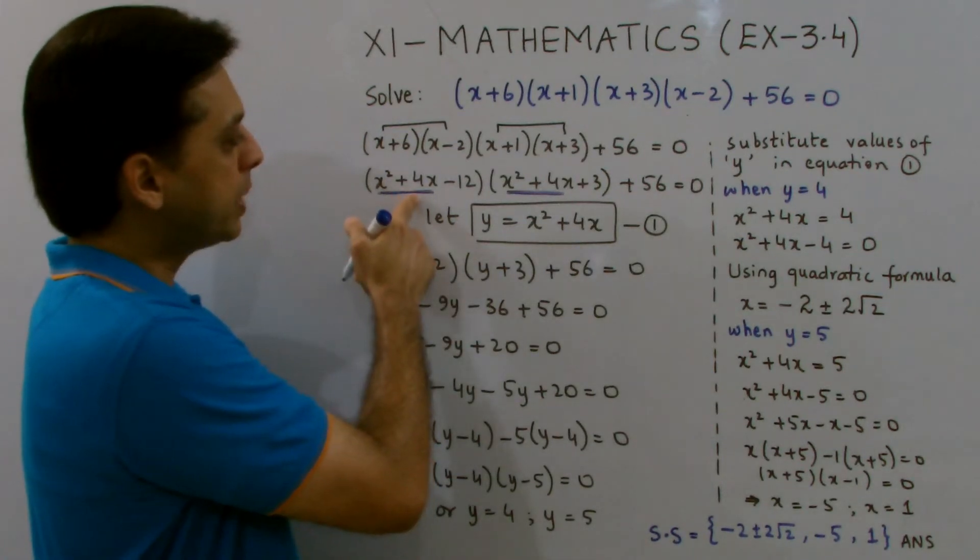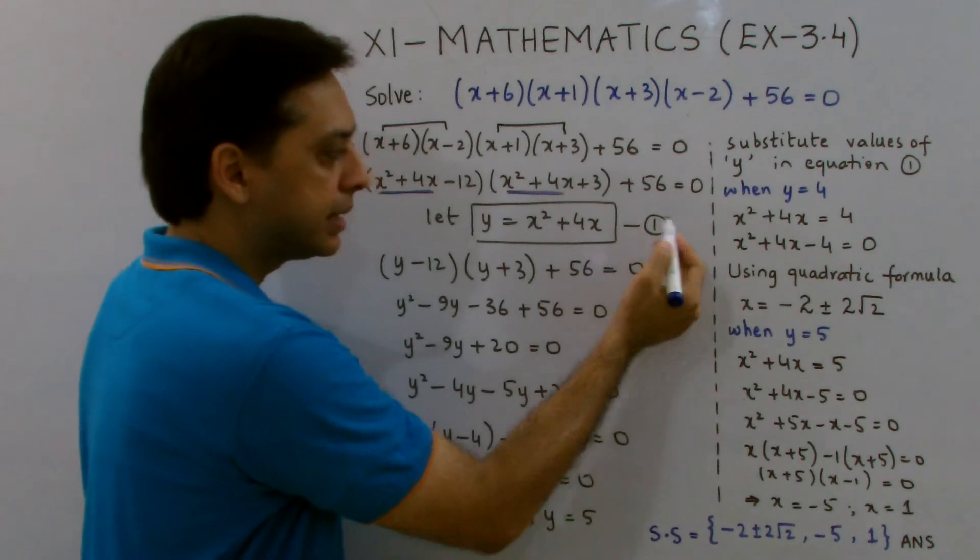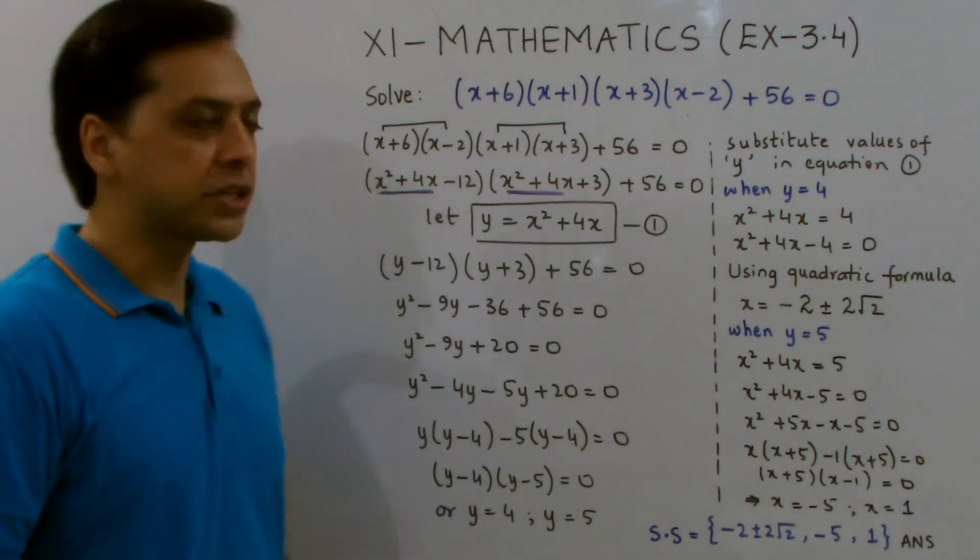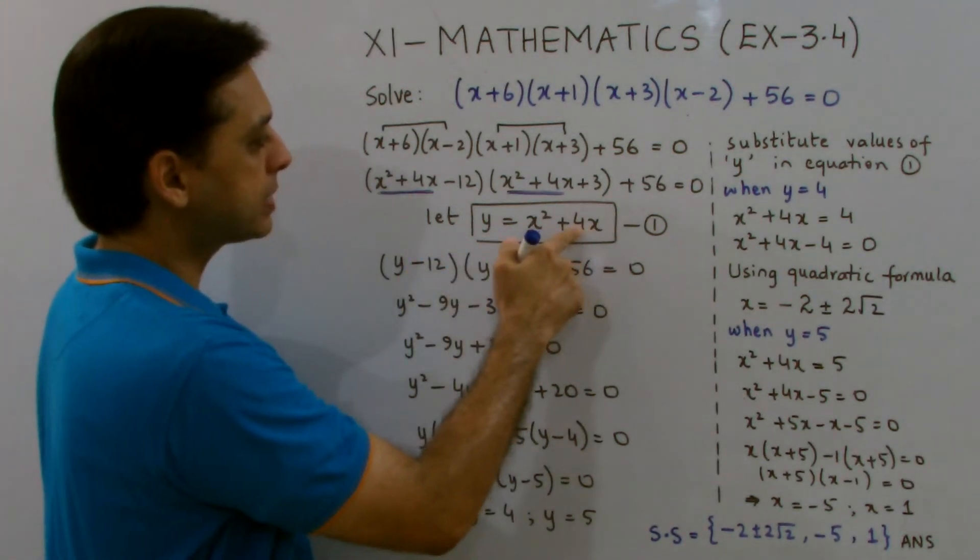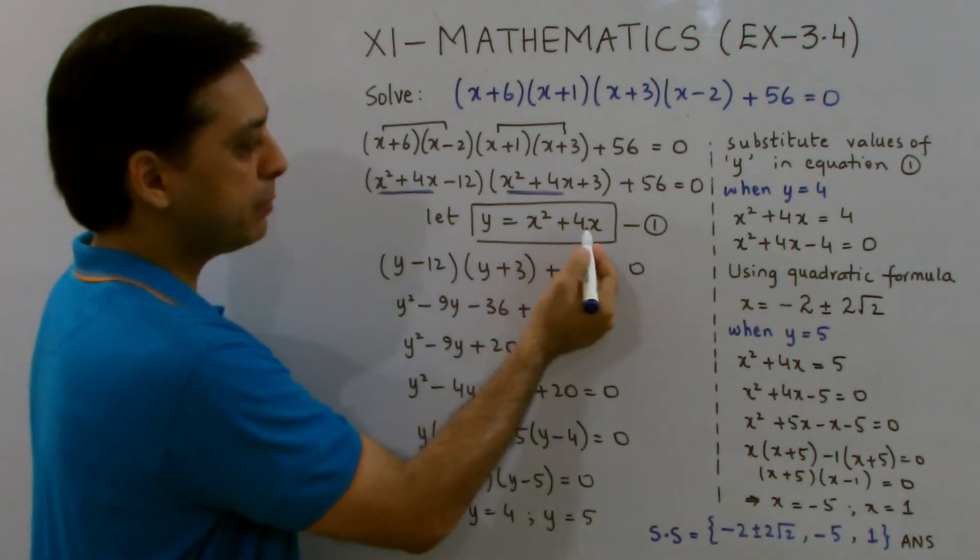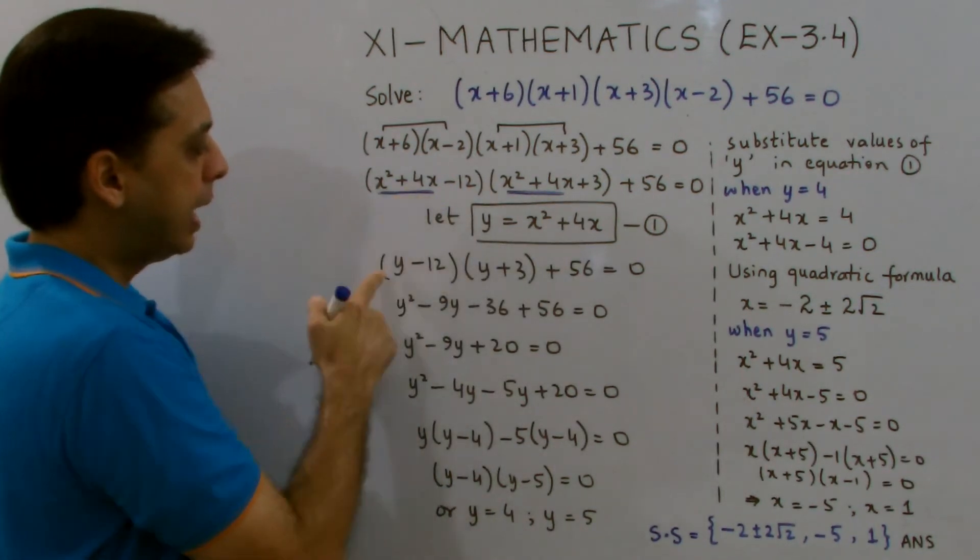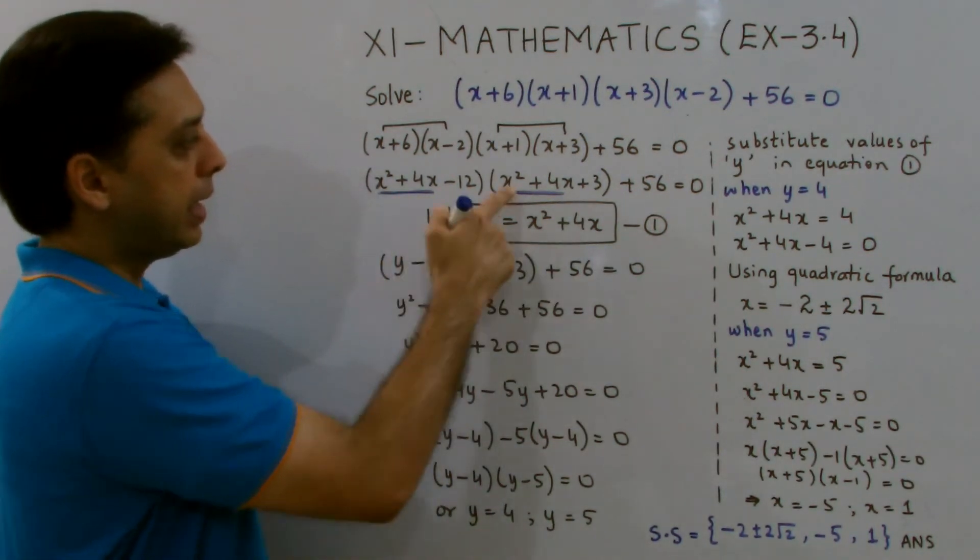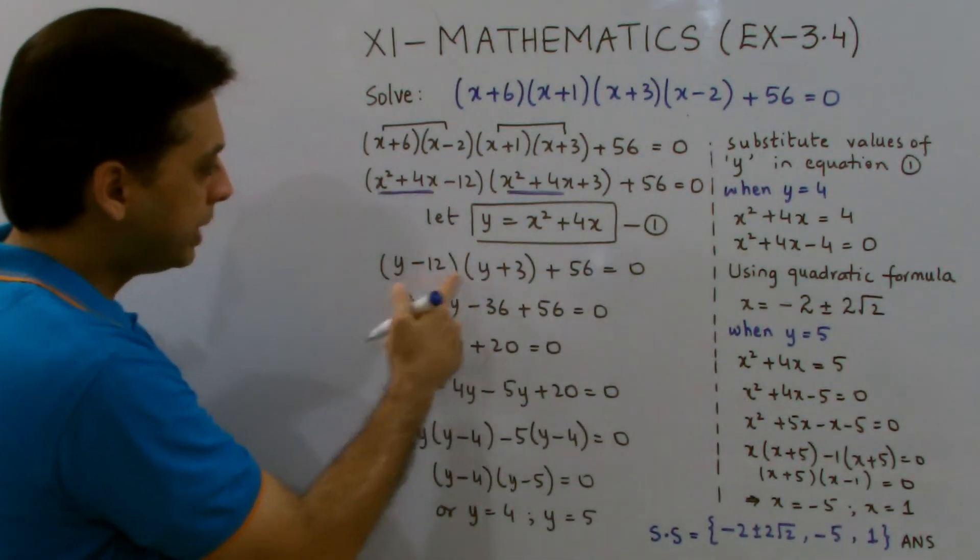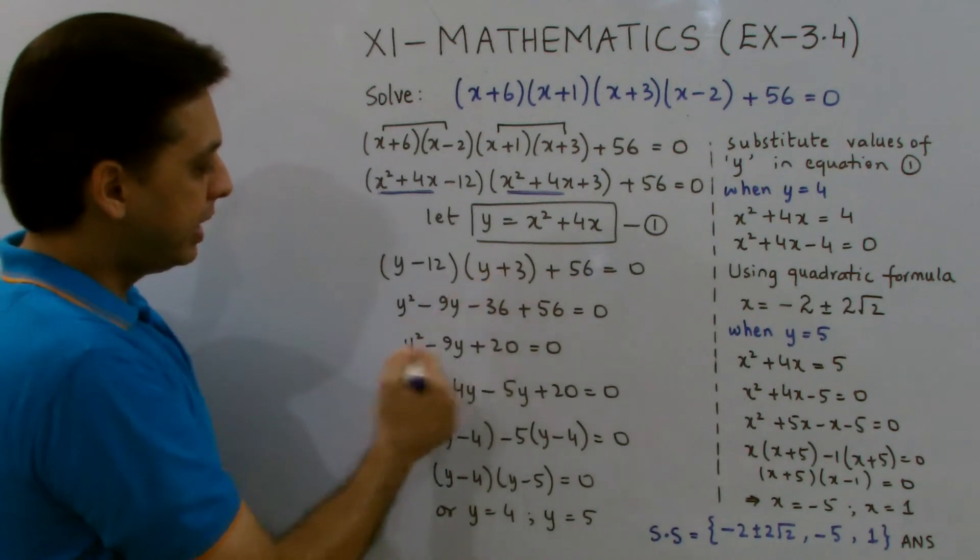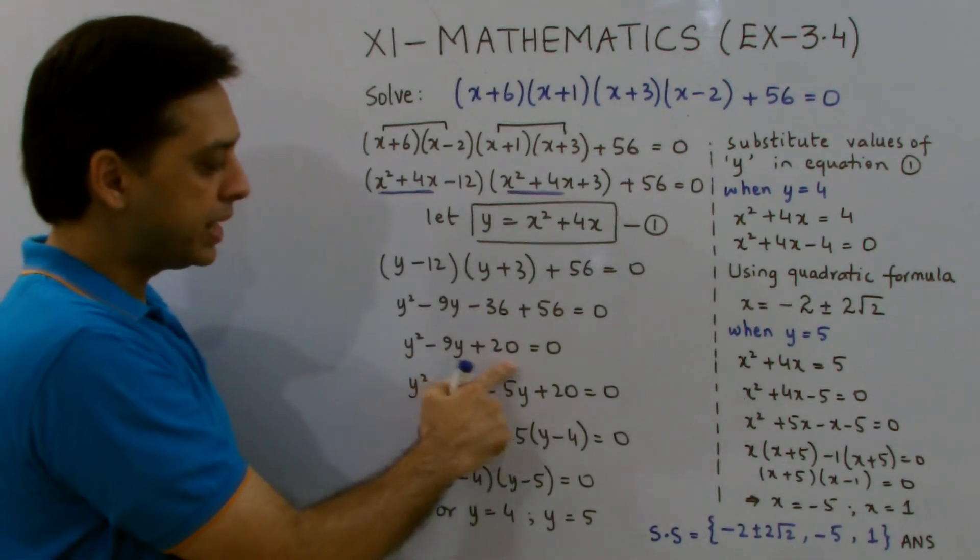Now, I suppose x squared plus 4x equals y, and I term this as equation number 1. When I substitute back this value of x squared plus 4x, when I put this as y in the above equation, I get y minus 12 times y plus 3 plus 56 equals 0. Through further multiplication, I develop a quadratic equation: y squared minus 9y plus 20 equals 0.